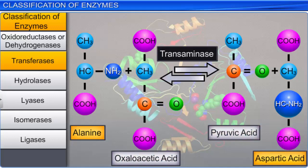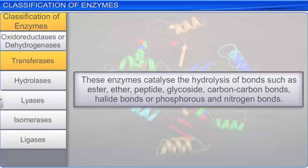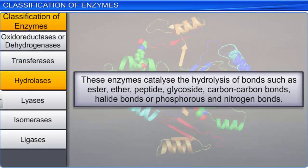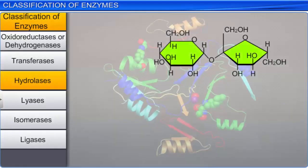The third class of enzymes or hydrolases catalyzes the hydrolysis of bonds such as ester, ether, peptide, glycoside, carbon-carbon bonds, halide bonds, or phosphorus and nitrogen bonds. For example, the hydrolysis of glycosidic bonds in sucrose by sucrase leads to the formation of glucose and fructose.